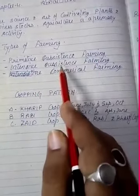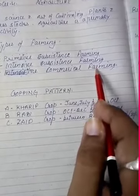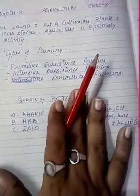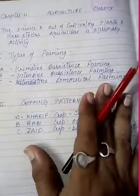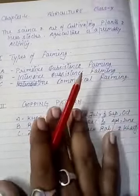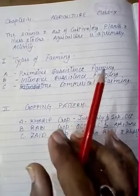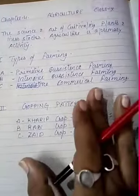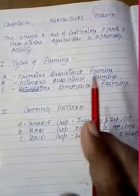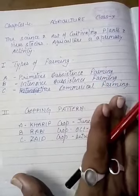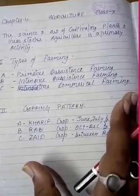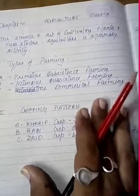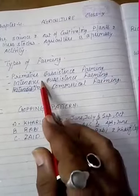The three types are: primitive subsistence farming, subsistence farming, and commercial farming. First, primitive subsistence farming — this type of farming is still practiced in few pockets of India. It is agriculture practiced on small patches of land with the help of primitive tools like hoe, digging sticks, and it is done with family and community labor. It is a slash and burn agriculture where farmers clear a patch of land and produce food crops to sustain their family needs. Jhoom farming is one of the biggest examples of primitive subsistence farming.